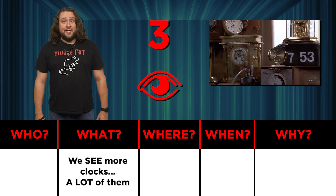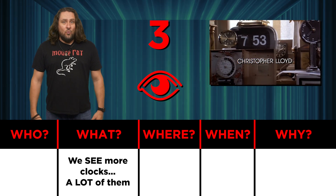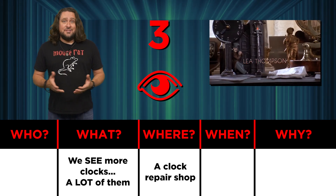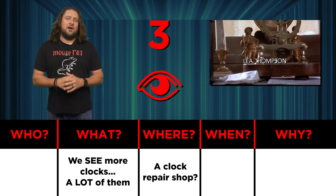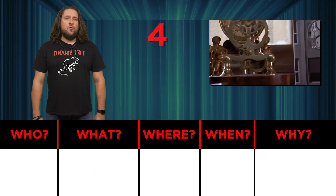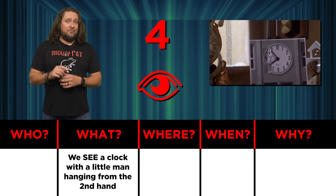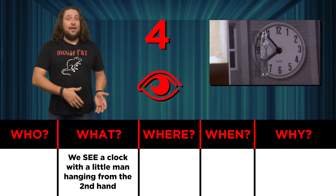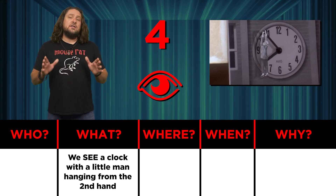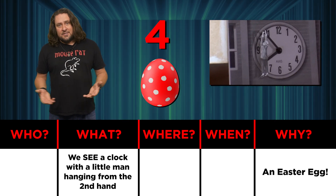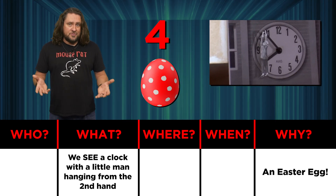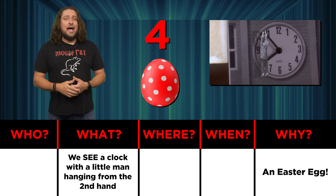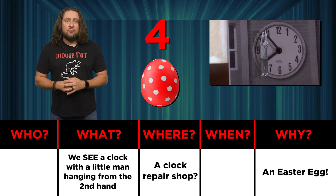Number three, we see more clocks — a lot of them, in fact. What might that be telling us? Where are we? Well, my first guess might be a clock repair shop, and since we're not 100% sure about it, let's add a question mark. Number four, we see a clock with a little man hanging from the minute hand. But most people wouldn't really notice that minor detail until they've seen the entire film and then watched it again from the very beginning. That's an example of an Easter egg — a cleverly hidden detail that refers to something of relevance within the story.